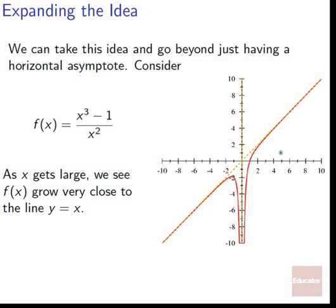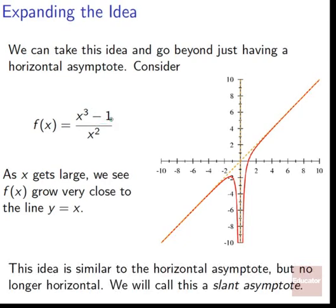We can take this idea beyond just a horizontal asymptote. Consider f of x equals x cubed minus 1 divided by x squared. As x gets large, we see f of x grow very close to the line y equals x — shown as a dashed orange line. They'll never be perfectly the same because of the minus 1, but they become really, really close. This idea is similar to a horizontal asymptote, but since it's at a slant, we call it a slant asymptote.